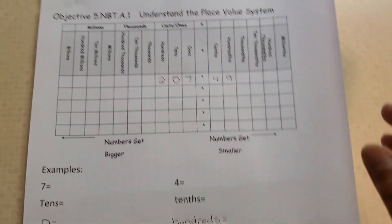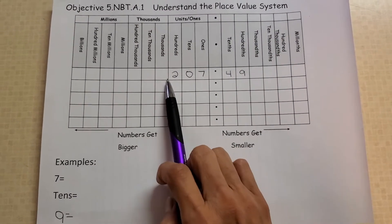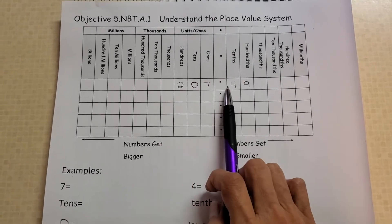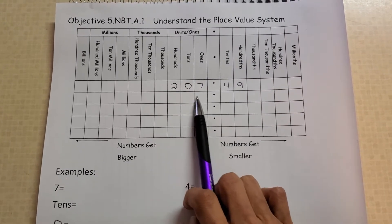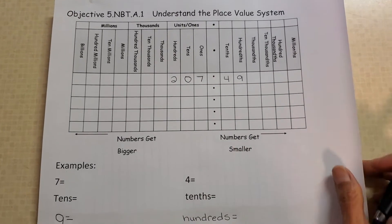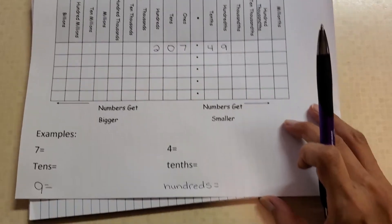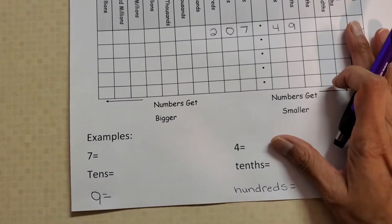Okay, now that you're back, today we're going to look at the number 207 and 49 hundredths. So what you're going to do is you're going to tell me where these numbers are on our place value chart. Let's take a look at our first example here. Our first example is seven.